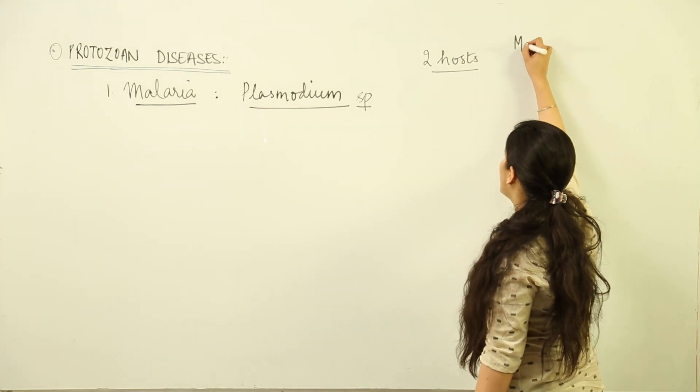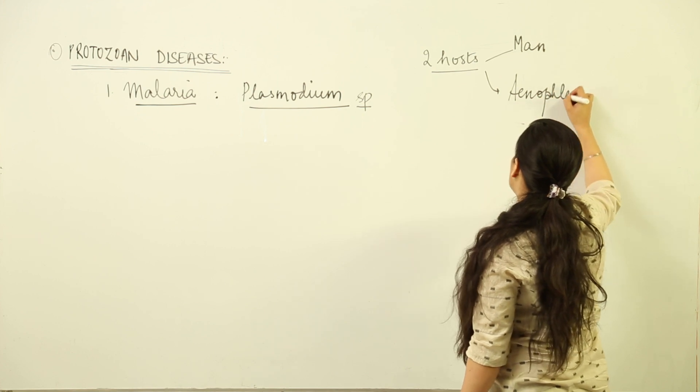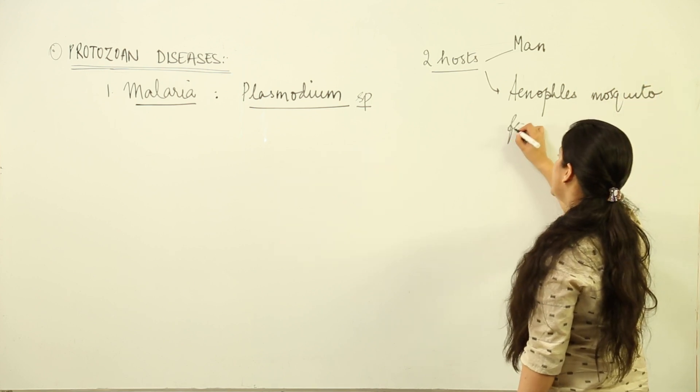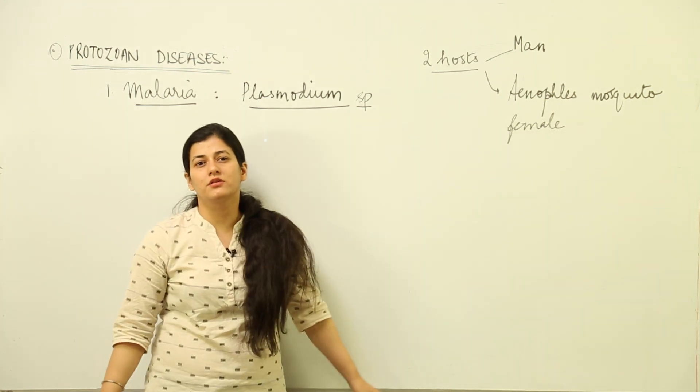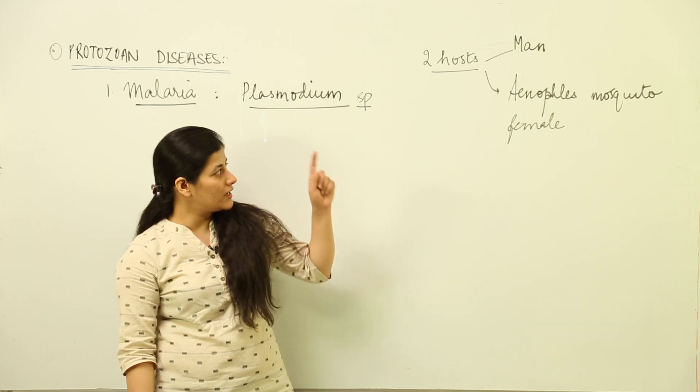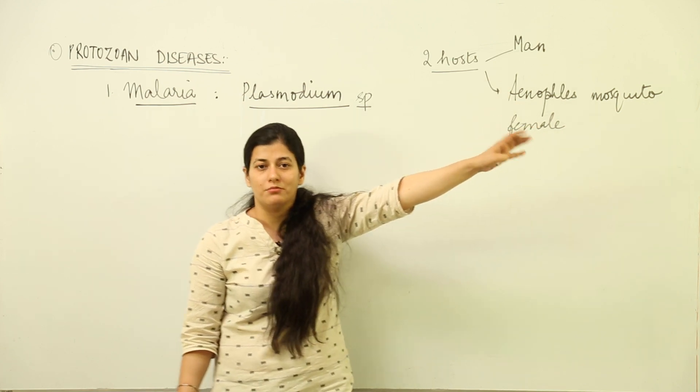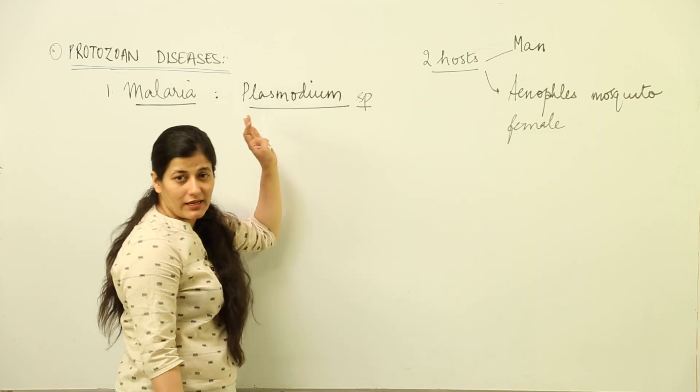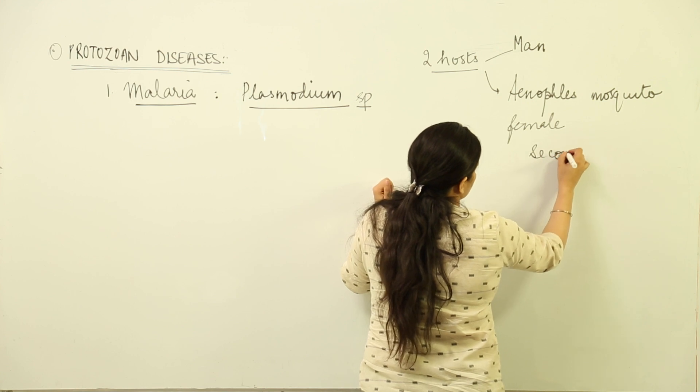Female Anopheles mosquitoes need human blood for completion of their reproductive cycle. They feed on it, and this Plasmodium has intelligently used Anopheles to infect human beings. Man or woman can be infected equally with the disease called malaria. This Anopheles is the secondary host for the protozoan, and man is the primary host.